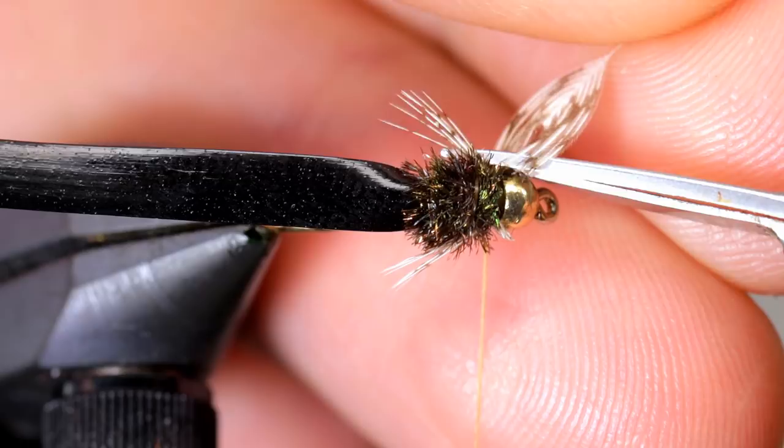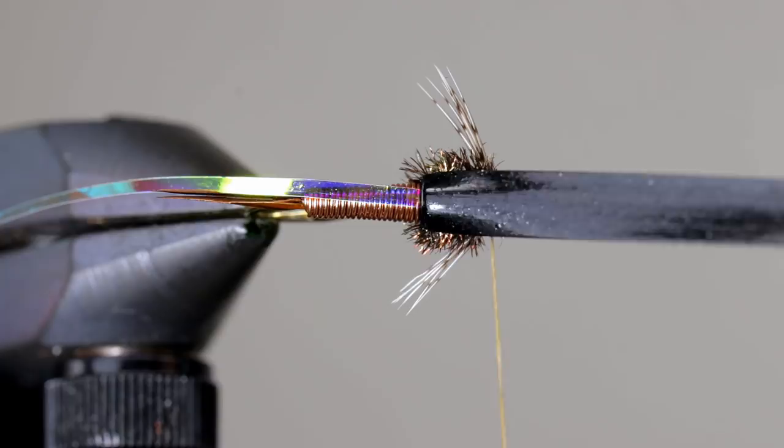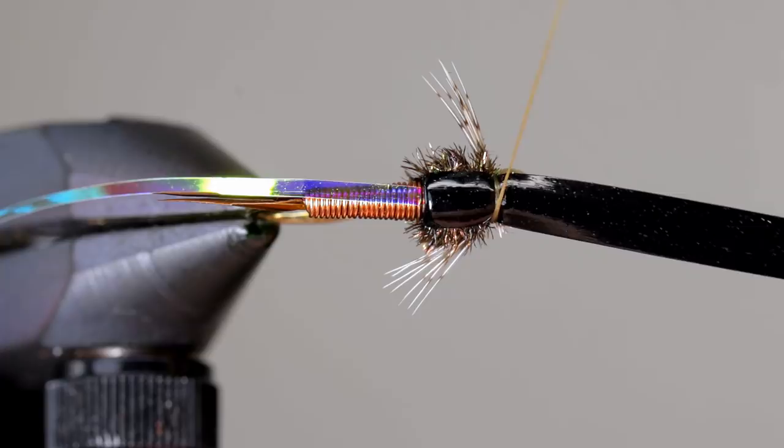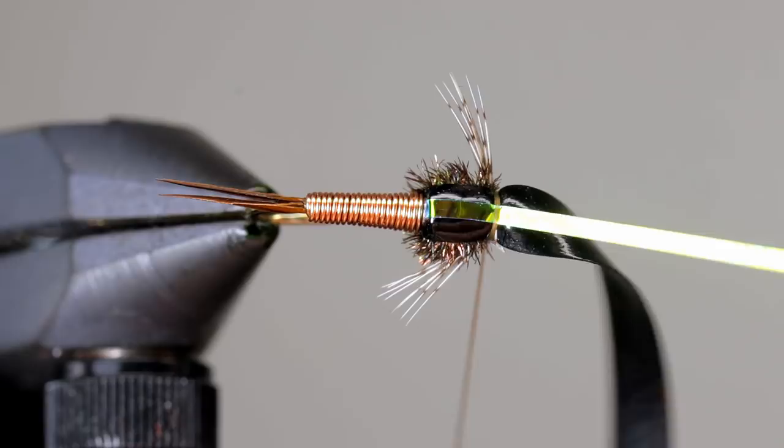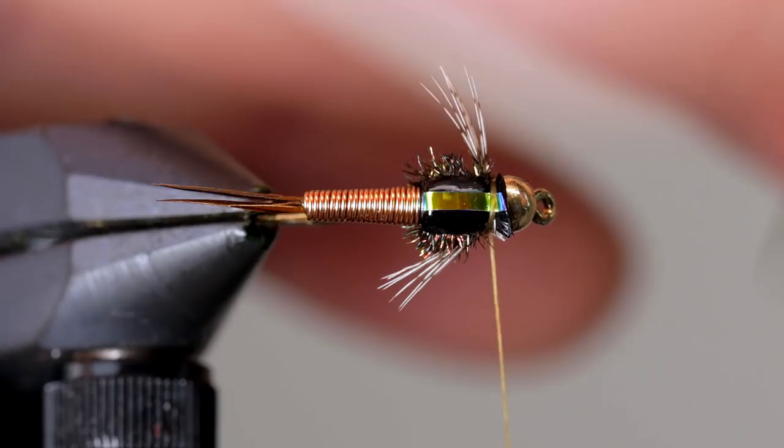Pull the scudback forward and take a couple of wraps so it stays in place, then repeat this with the mylar tinsel. Once the wing case is formed, pull both materials up and trim them off close to the bead, but leave little stubs remaining.